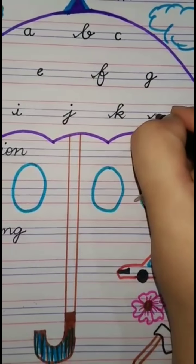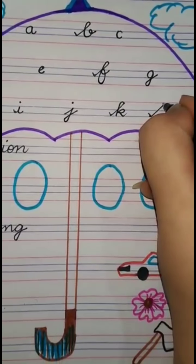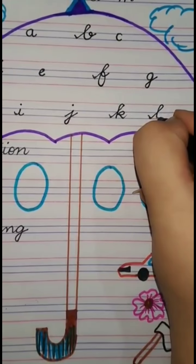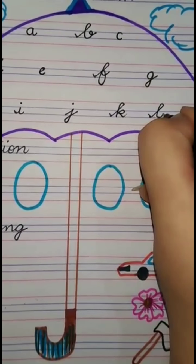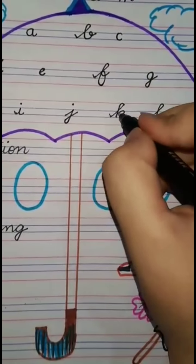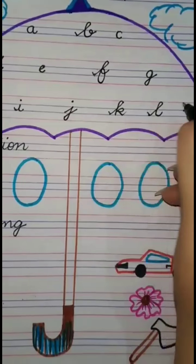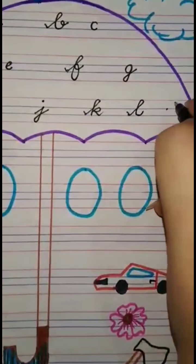Next is la. First you make a tick, curve down, and cut it on the second line, then make a curve, like a ka.